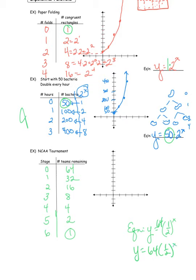What does the graph look like? This one starts way high at 64. Counting by 5s: at stage 1 it's 32, at stage 2 it's 16, at stage 3 it's 8, at stage 4 it's 4, and so on — the graph comes down steeply. This graph looks quite different from the other ones: the other ones were increasing, this one is decreasing — exponential decay. You can see it in the table, in the graph, and with the multiplier being less than 1.